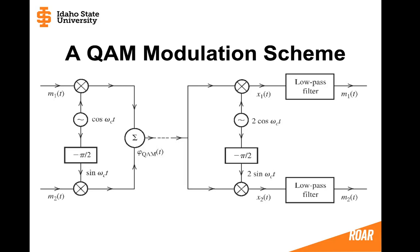Upon demodulation, we attempt to recover both message 1 and message 2. Message 1 is demodulated using a 2cos(ω_c·t) signal, producing a signal X1 that passes through a low-pass filter. Message 2 is demodulated in a similar way using a sine wave, producing signal X2, which is then filtered to recover message 2.